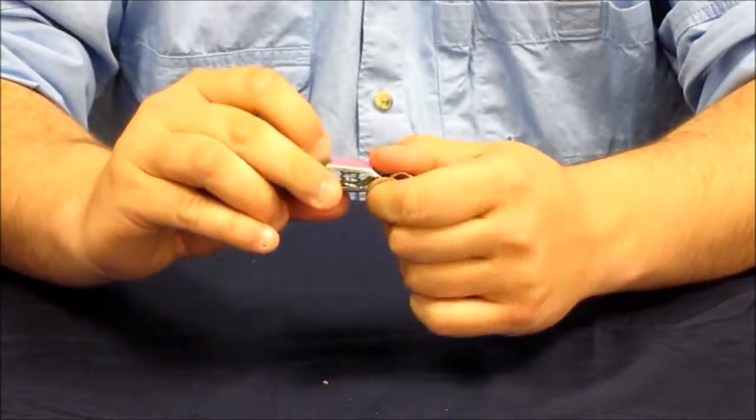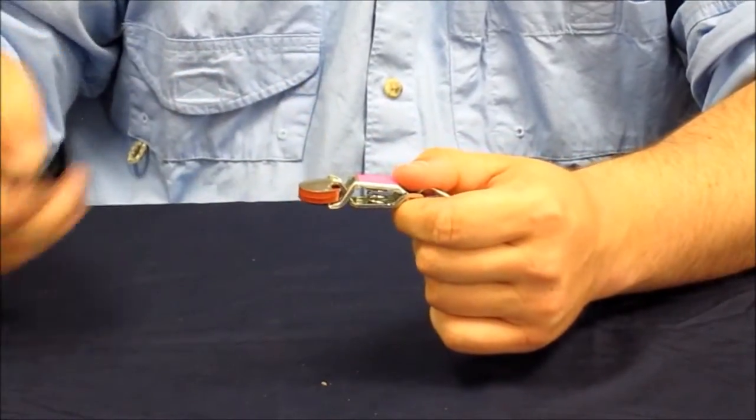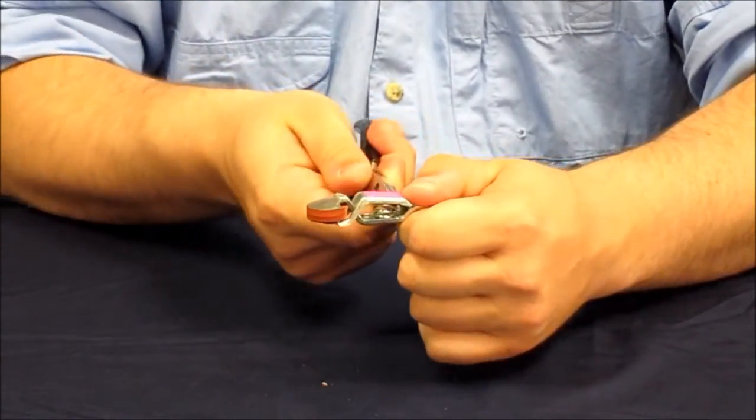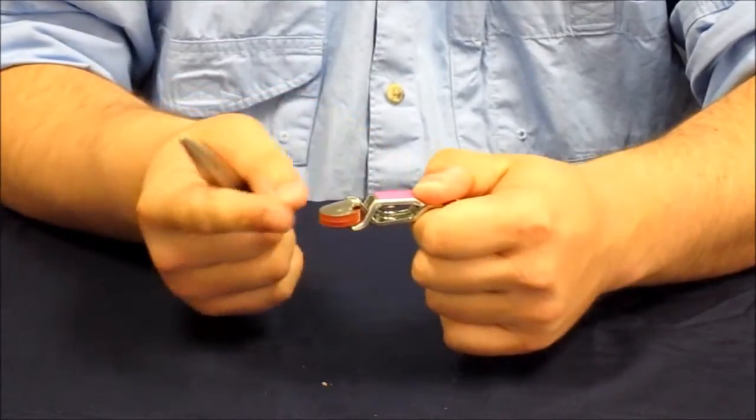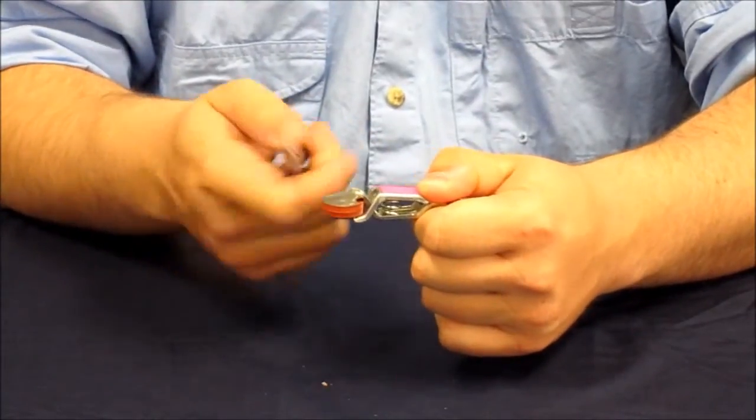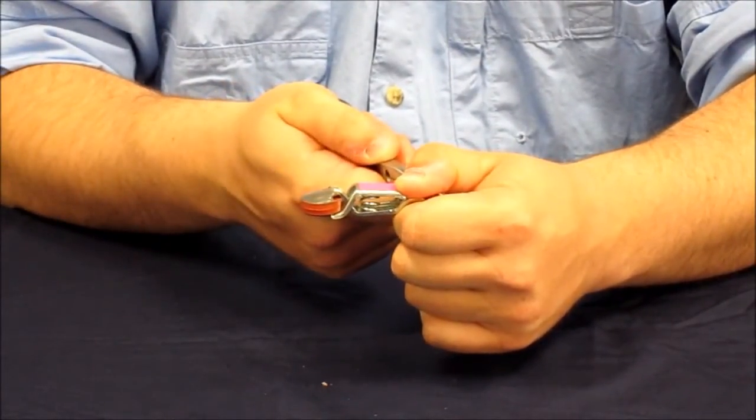The spring which can be easily adjusted with a pair of pliers by pushing the spring all the way forward. This gives you more tension on the pad. If you slide it all the way back, it'll give you less tension.